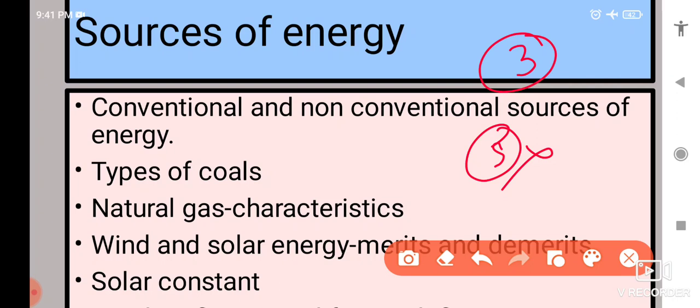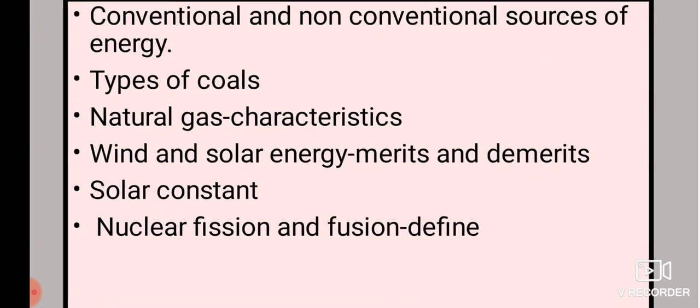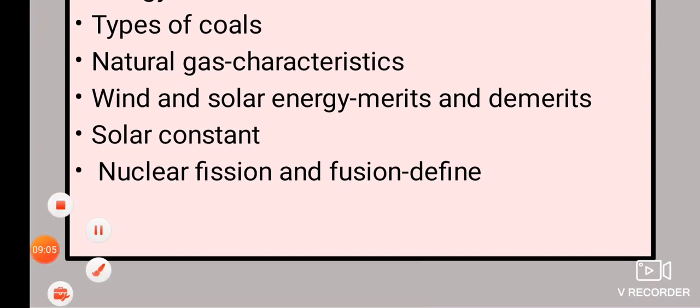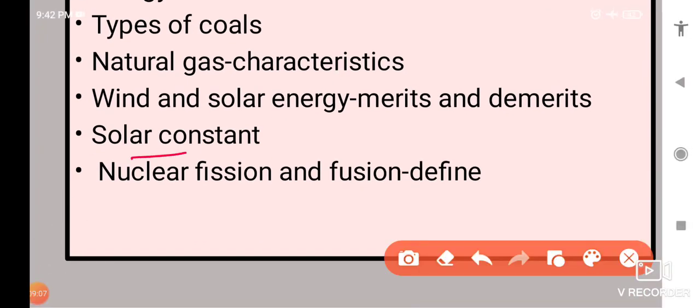So this is the first topic. Then types of coals, characteristics of natural gas. Define natural gas and its characteristics can be asked. Wind and solar energy, I mean wind energy, solar energy, its merits and demerits. Then solar constant, define solar constant. Then define nuclear fusion reaction and nuclear fission reaction.